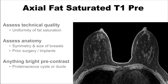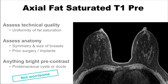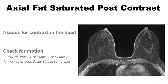Use the axial fat-saturated T1 pre-contrast image to again assess technical quality, looking for uniformity of fat saturation. Next, look at the symmetry and size of the breasts and whether there's any prior surgery or breast implants. And lastly, anything that's bright on the pre-contrast image. This could include proteinaceous cysts or dilated ducts. In general, structures that are bright pre-contrast are not worrisome.